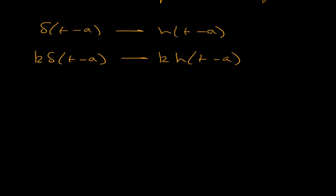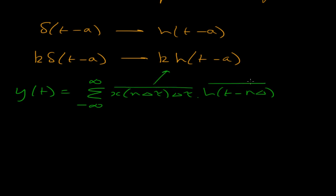Let me write that down. I can represent the output now. The output is a sum from minus infinity to infinity of all the impulses, that's their strength, times the impulse response. This bit here is k, and this bit here is that h there.